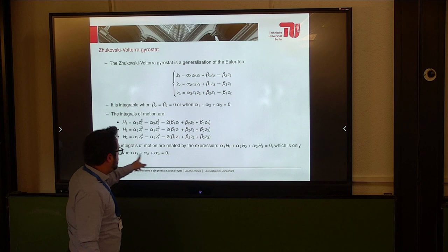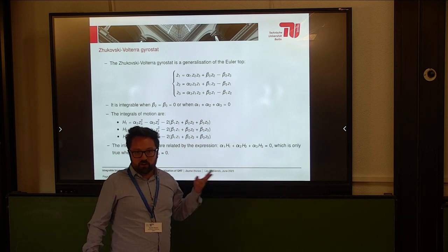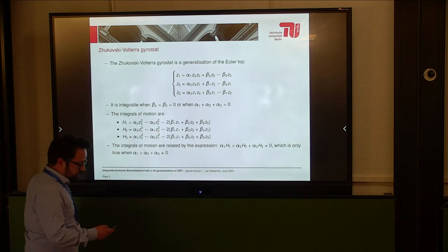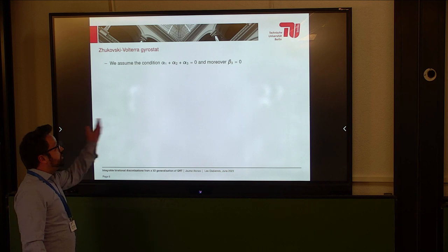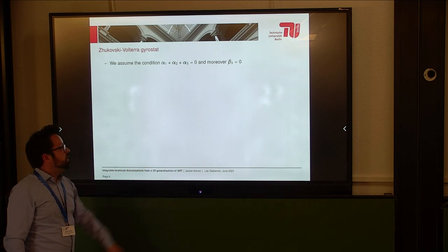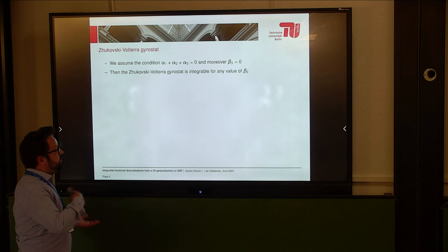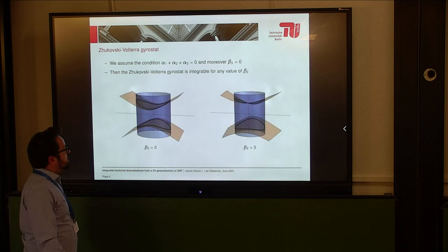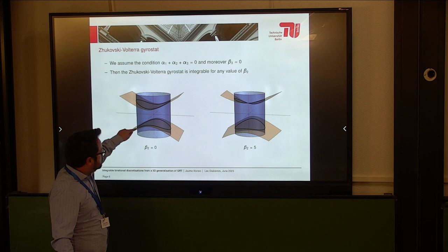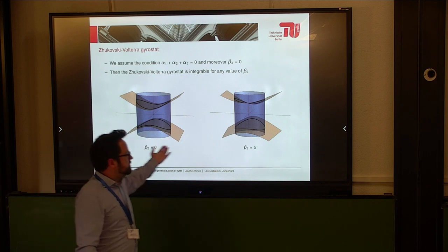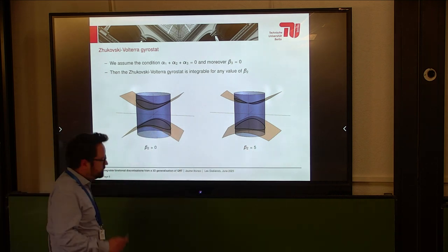If there's this condition, then these integrals also satisfy a relation, because we are in dimension three and there can only be two independent conserved quantities. We assume we put even one extra condition. So we have two reasons why this should be integrable, and then regardless of the value of beta zero or beta two, this should be integrable. That means in the continuous setting I would have two conserved quantities, and the trajectory would lie at the intersection of these conserved quantities. This is true for any value of beta two.